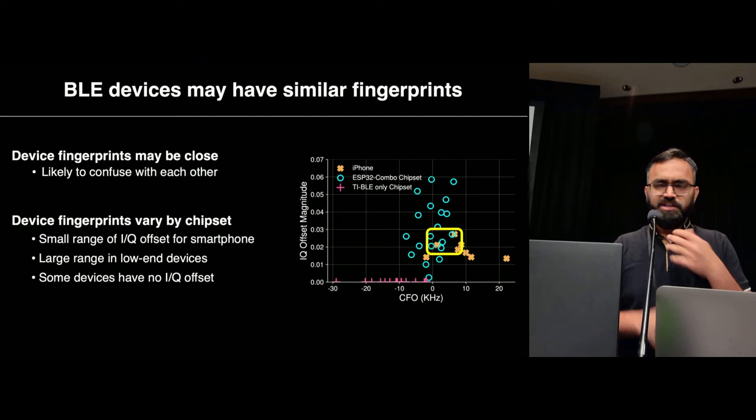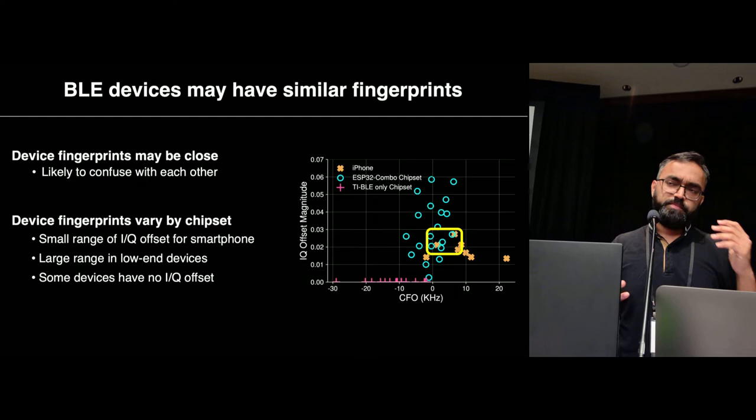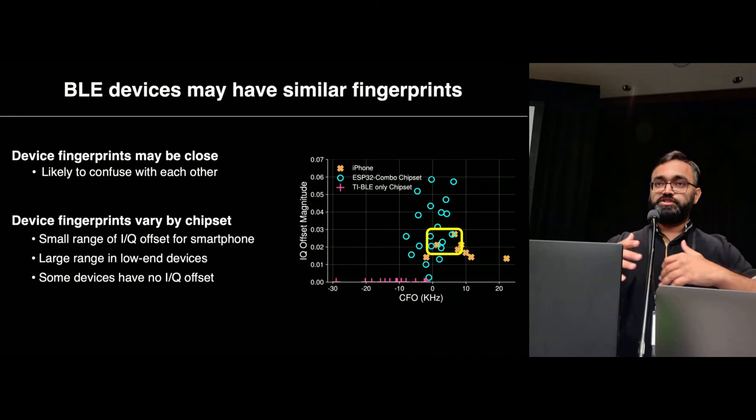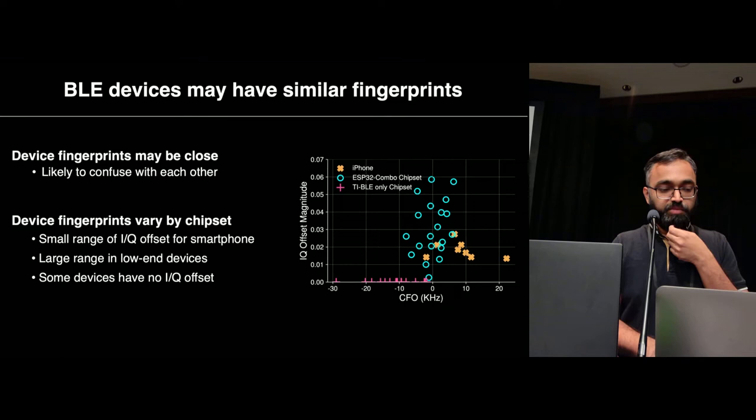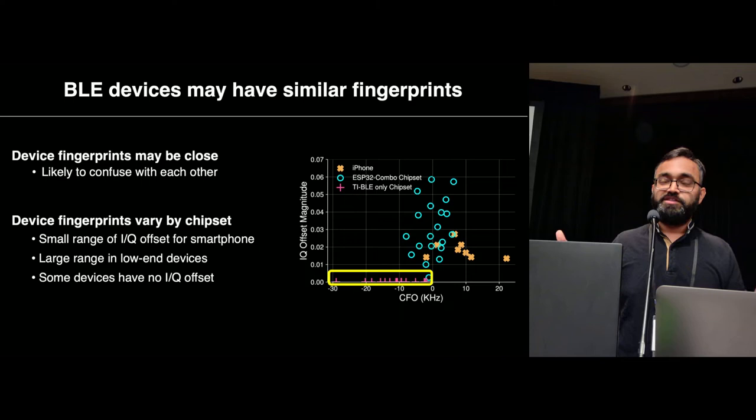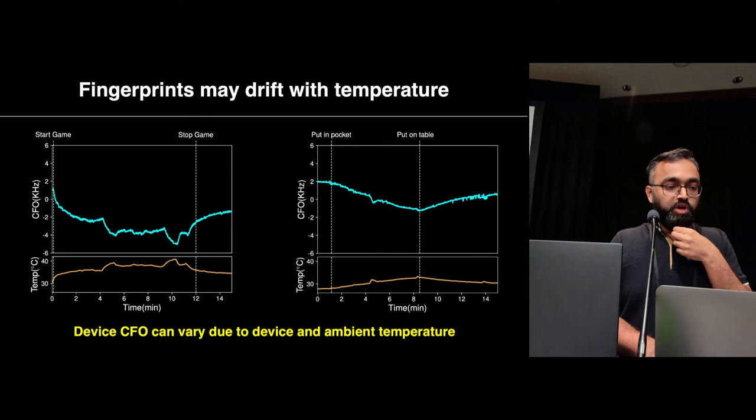Another observation is that these estimated parameters depend on the chipset. Some chipsets across different radio types have wide variation in these parameters. In particular, there was one type of chipset — BLE-only radios — that had absolutely no IQ offset, because they have a completely different radio architecture. This makes them particularly harder to fingerprint.